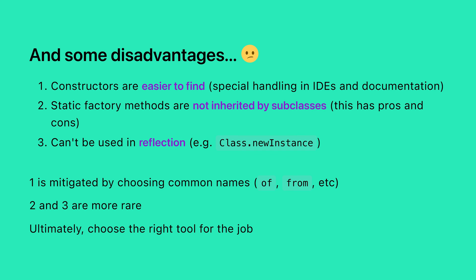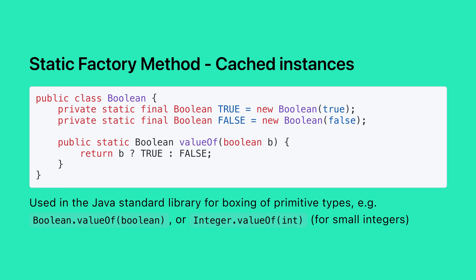Static factory methods are not inherited by subclasses and they can't be used in reflection. But typically, you can work around these limitations quite easily. Unlike constructors, static factory methods don't have to create new instances — they can return cached instances. The Java Standard Library uses this for boxing primitive types, like Boolean.valueOf.